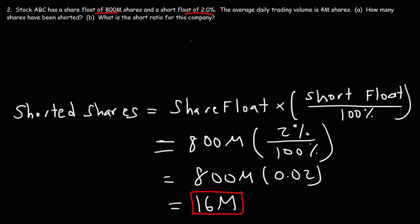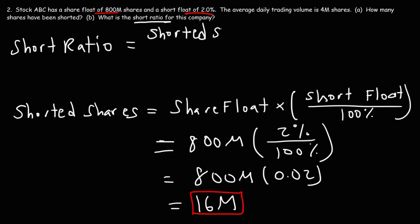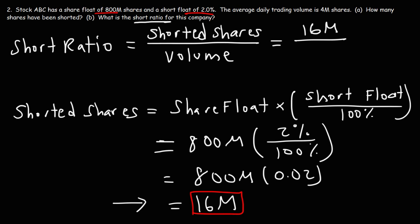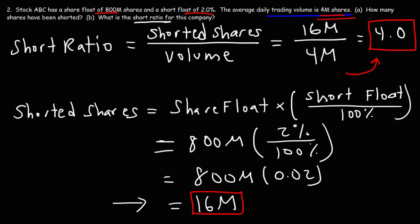Now, Part B: what is the short ratio for this company? The short ratio equals the number of shorted shares divided by the average daily trading volume. We have 16 million shorted shares and an average daily trading volume of 4 million. So 16 divided by 4 gives us a short ratio of 4.0. If the average daily trading volume remains at 4 million shares, this tells us it will take on average 4 days for short sellers to cover their positions if the stock begins to rise.